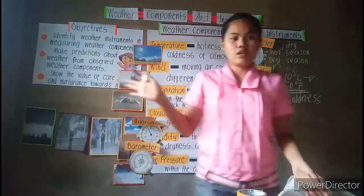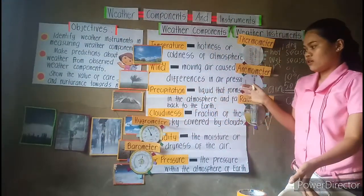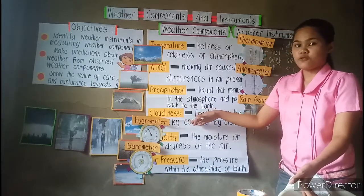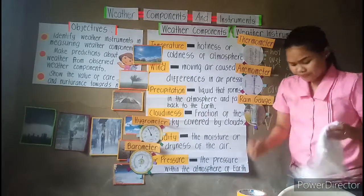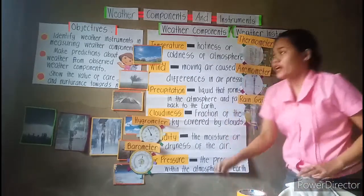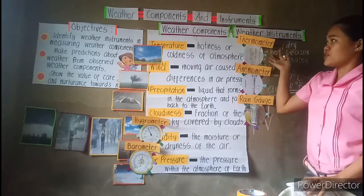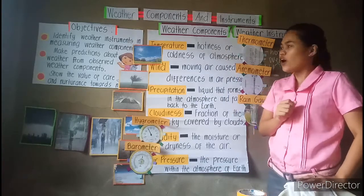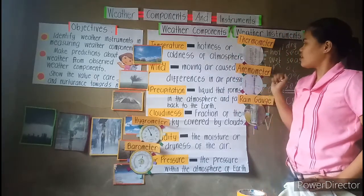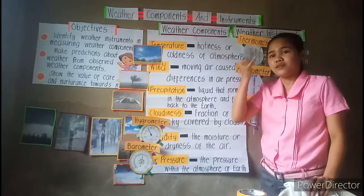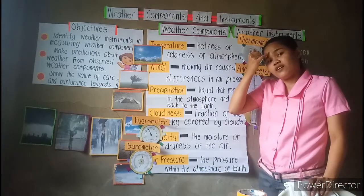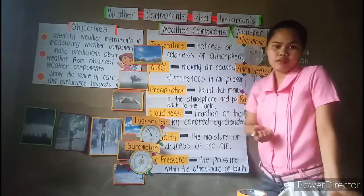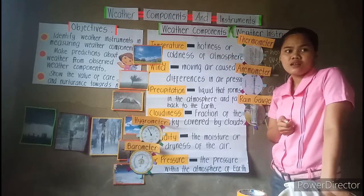Are we all clear for the instruments? Any questions? Except for the cloudiness, we don't have any instrument used to measure cloudiness. That's it for our instruments used to measure weather components. There are five instruments. Any further clarifications? None so far.